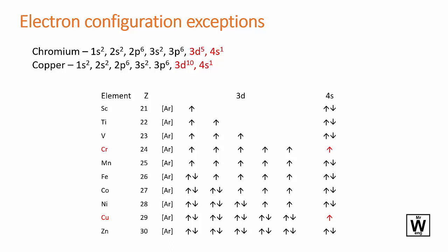So the exceptions to the electron configuration rules are shown here for chromium and for copper.